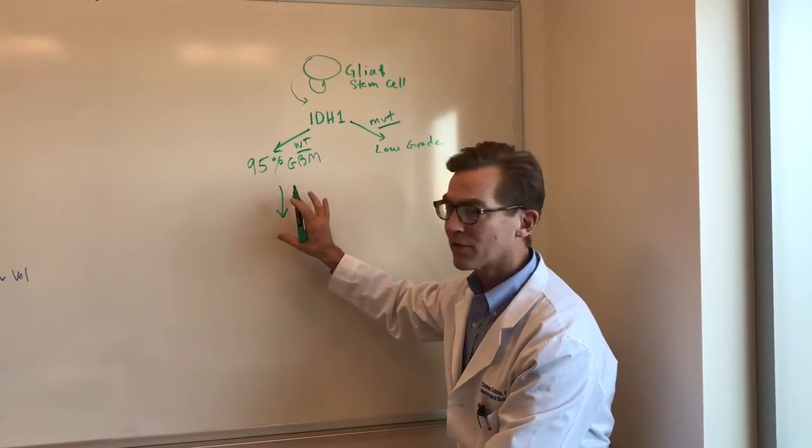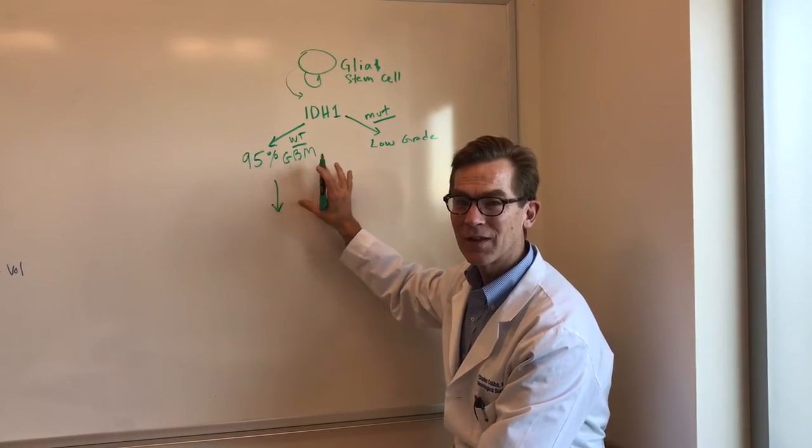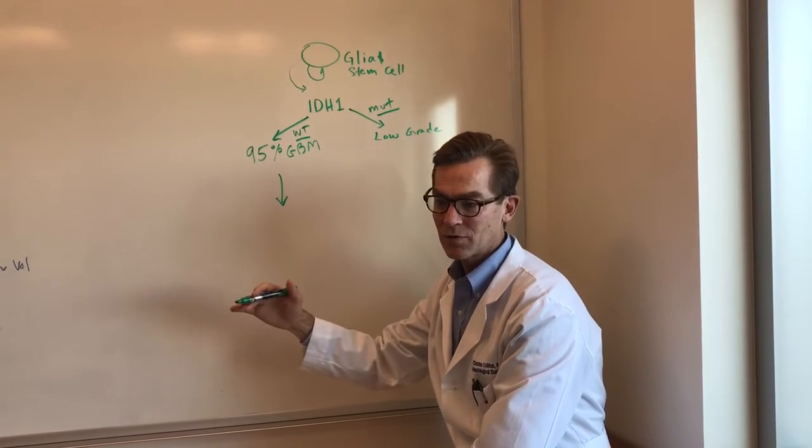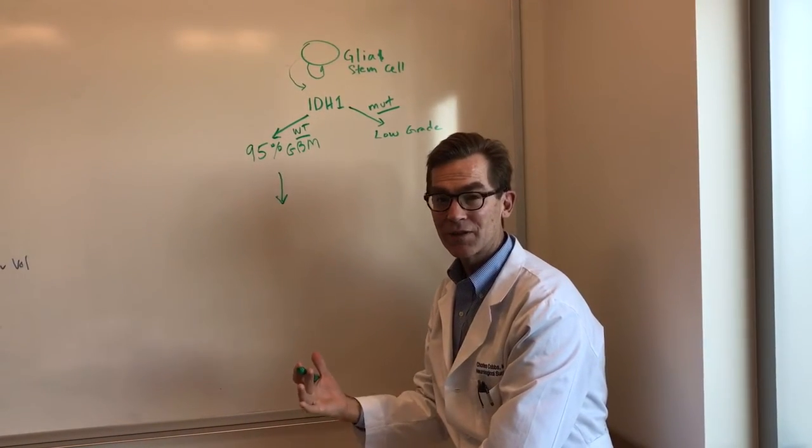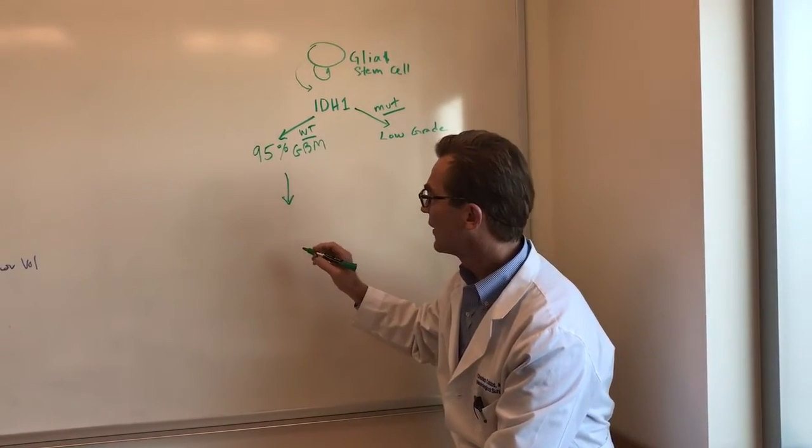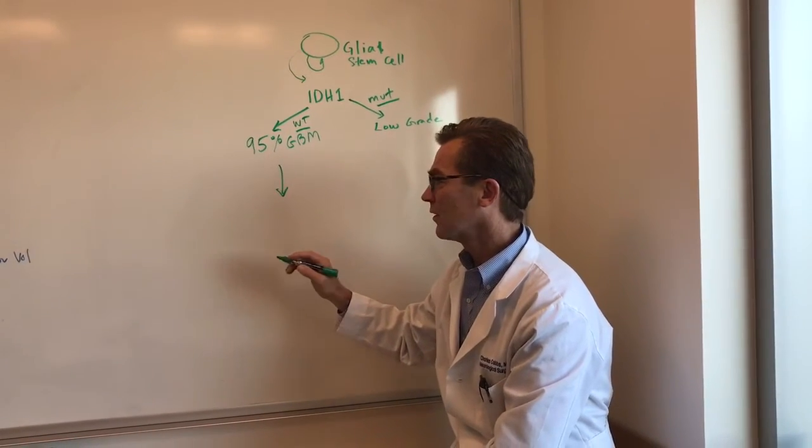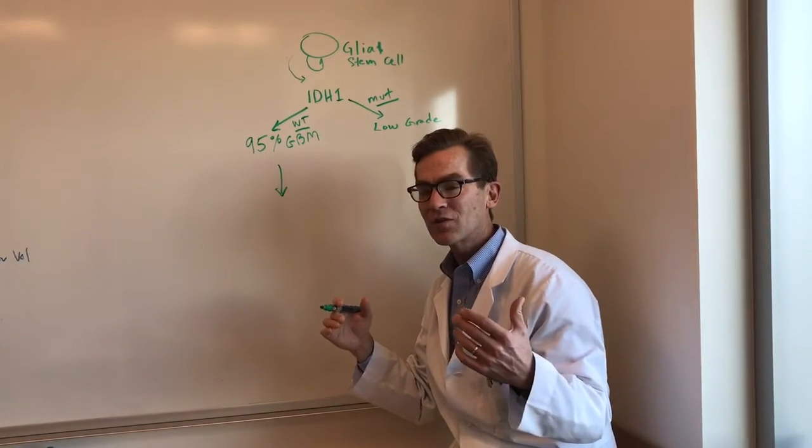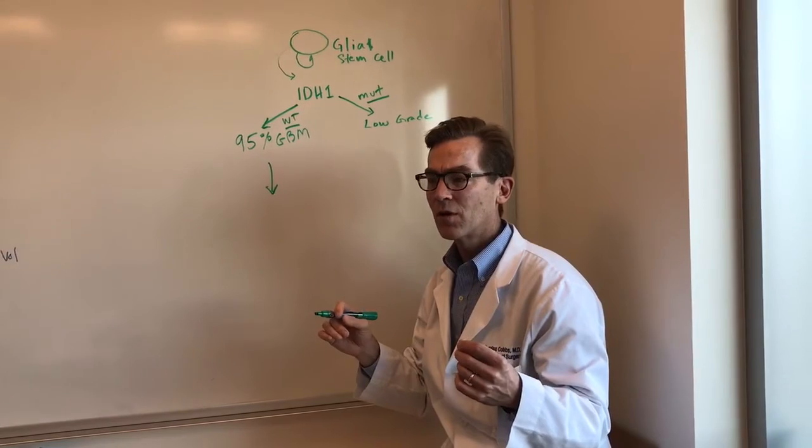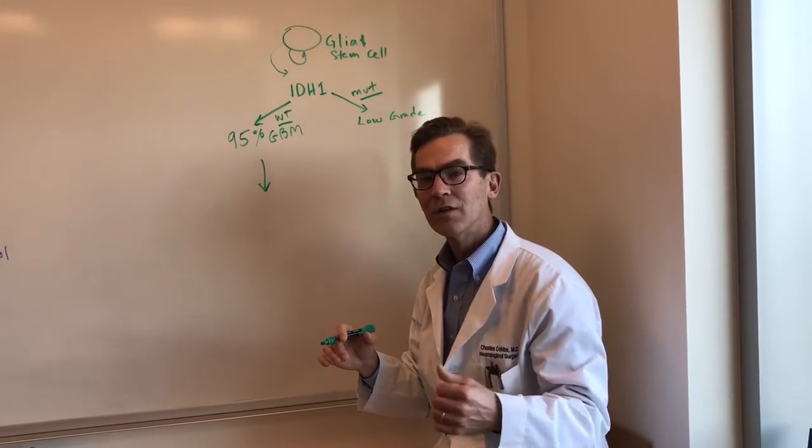We do have a marker that sort of discriminates glioblastomas between more rapidly progressing and those that might respond better to chemo and radiation, and that's due to a marker that's not actually a mutation, but it's a marker that is called methylation of the gene.